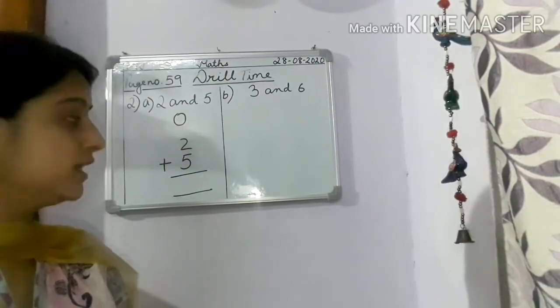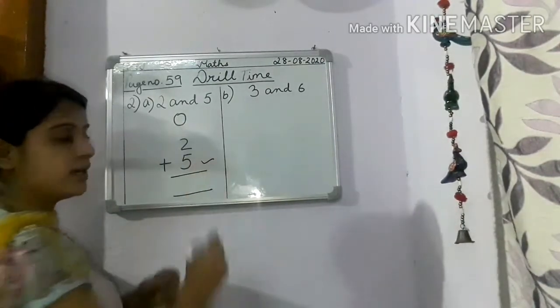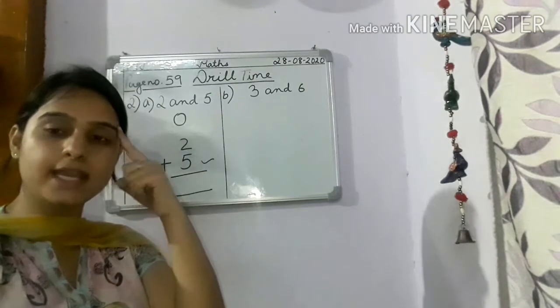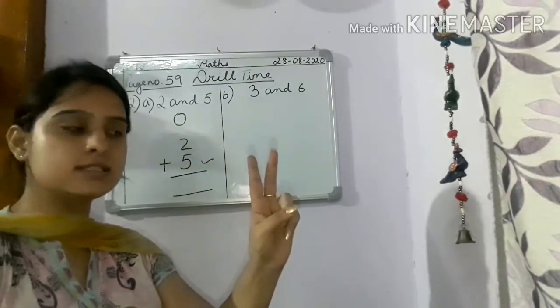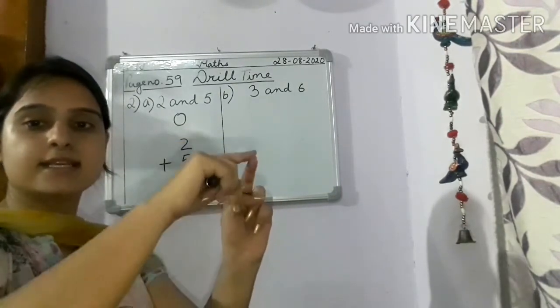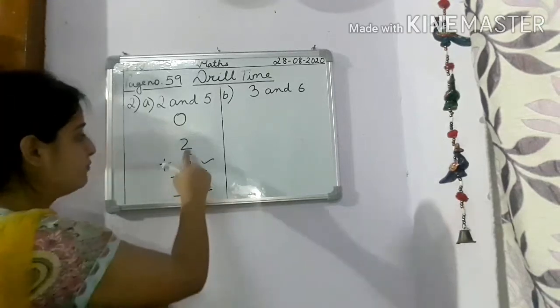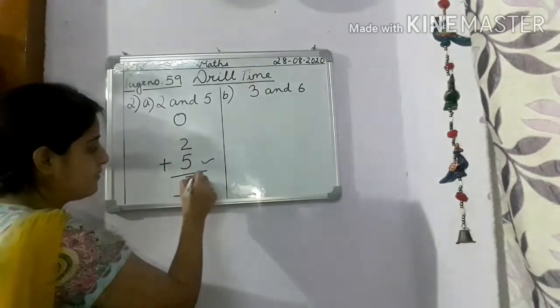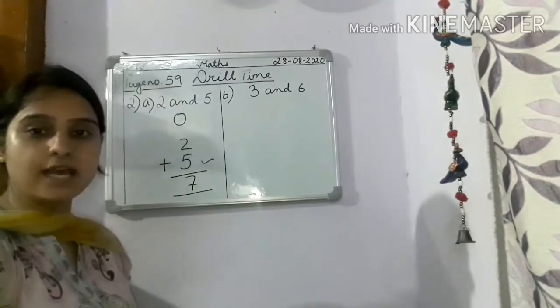2 plus 5. So now you count children. Keep the bigger number in your mind, 5 in your mind. Open two fingers. 6, 7. So 2 plus 5 is what? 7. The sum is 7.